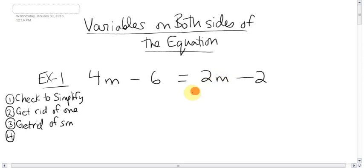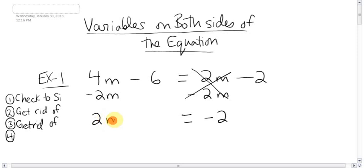How do I get rid of 2m? I'm going to subtract 2m from this side. And I can do the exact same thing on the other side. That makes the 2 and the m completely go away. You're left with negative 2 over here on this side. On this side, you have 4m minus 2m.